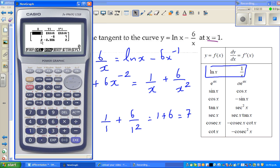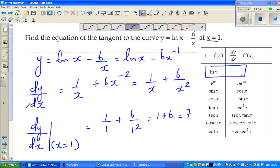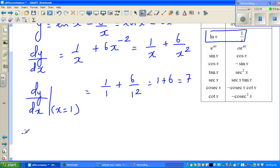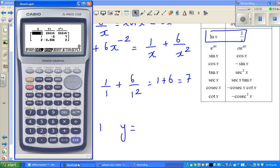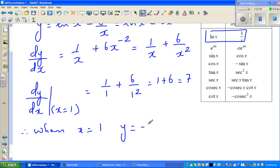So at 1, the y value is negative 6. So you can say at 1, negative 6, the gradient is 7. So you can write, therefore when x equals 1, y equals negative 6, and dy by dx is 7.